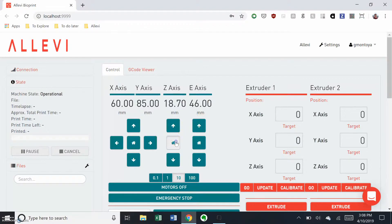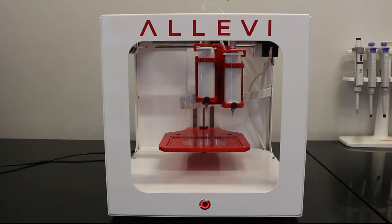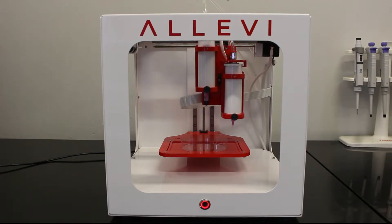In the Alevi software, home the z, e, and xy axes. This will lower the bed plate and bring the extruders to the front right of the printer.